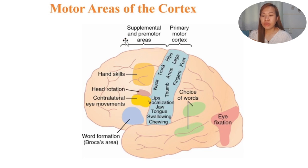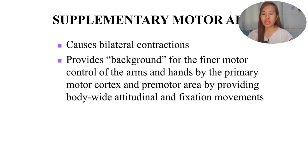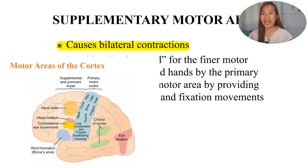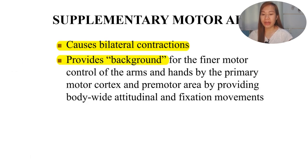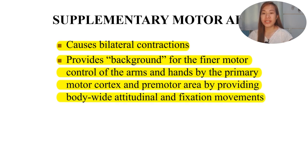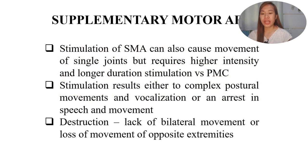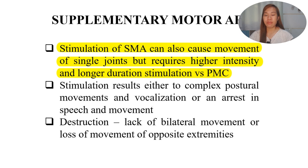Moving on to the supplementary and premotor areas. The supplementary motor area causes bilateral contractions - that's why when we look at its location, it is also located bilaterally. It provides background for the finer motor control of the arms by the primary motor cortex and premotor area, by providing body-wide attitudinal and fixation movements. If the supplementary motor area is stimulated, it can also cause movement of single joints, but it requires higher intensity and longer duration stimulation versus the primary motor cortex.